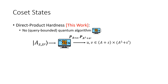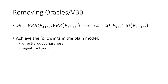The direct product hardness of coset states naturally gives the construction of signature tokens, still relative to classical oracles. Next, we show that by replacing VBB obfuscation with IO, we can achieve direct product hardness in the plain model, which then naturally gives the construction of signature tokens in the plain model.